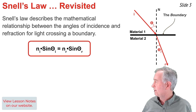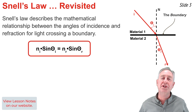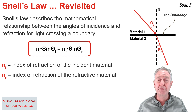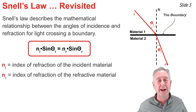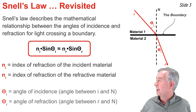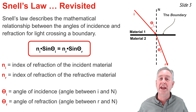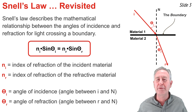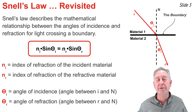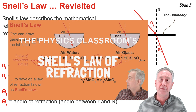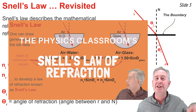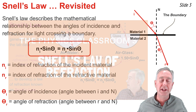The Snell's Law equation looks like this. In the equation, the n_i and n_r symbols represent the indices of refraction of the incident and the refractive material, and the theta_i and theta_r symbols represent the angles of incidence and refraction. It's important to note that these angles are measured between the light ray and the normal line. This topic was introduced in a previous video called Snell's Law of Refraction, and I left a link to it in the description section of this video if you need to review it.